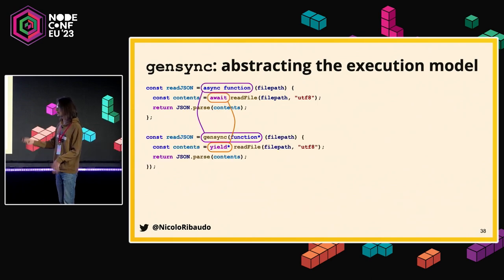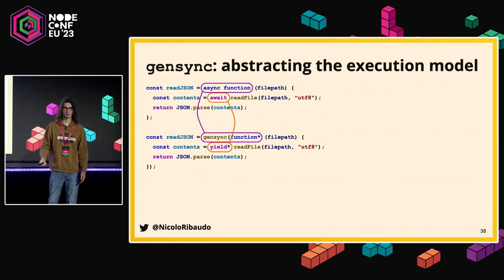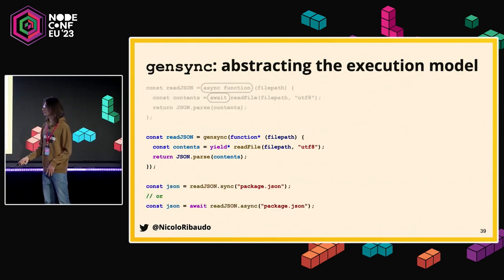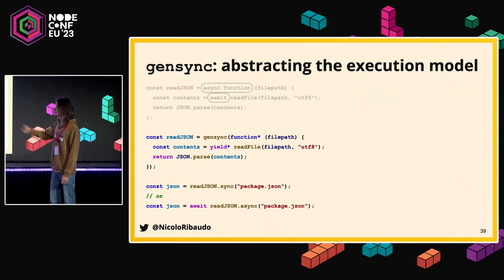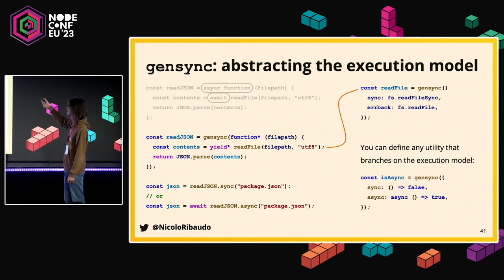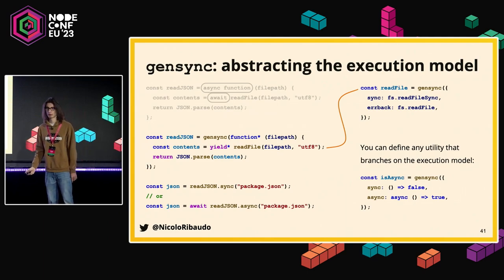Gensync is based on generators — similar to the 'co' library from before async/await. You wrap your generator with this library, write your code once, and the library takes care of running it both synchronously and asynchronously. For I/O exit points you define what the sync and async behaviors are, but most of your code is written just once.